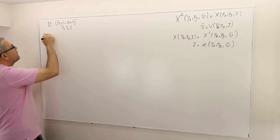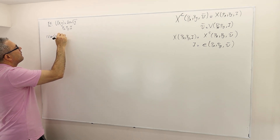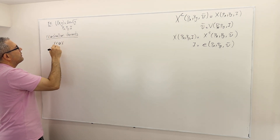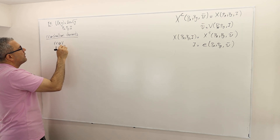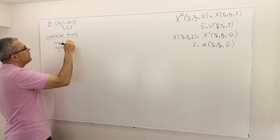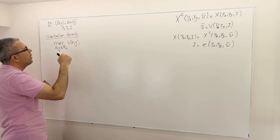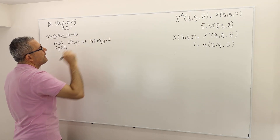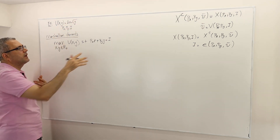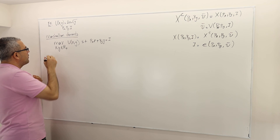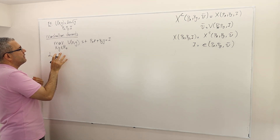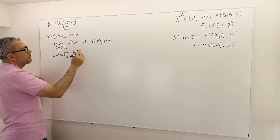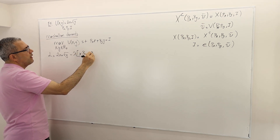To find the Marshallian demand, we solve the maximization problem: choose X and Y from non-negative reals to maximize utility 2X plus square root of Y, subject to the budget constraint PX·X plus PY·Y equals income. Because the utility function is increasing, I ignore the inequality. The Lagrangian is the utility function 2X plus square root of Y, minus lambda times the constraint PX·X plus PY·Y minus income.